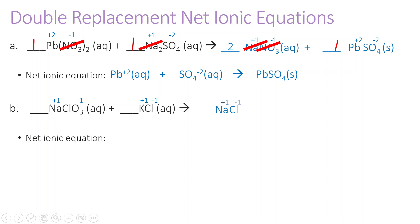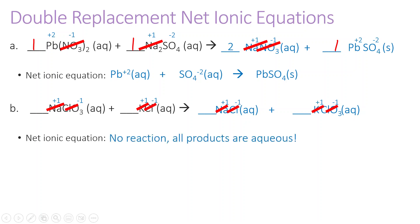I'm going to end up with sodium chloride — plus one and minus one works — and potassium chlorate, plus one and minus one as well. Now, sodium and potassium are both group one ions, so they're going to form aqueous compounds. Group one ions like sodium, lithium, potassium, and rubidium are considered always soluble. So NaCl is aqueous and potassium chlorate is also aqueous. Since everything starts as aqueous and everything ends as aqueous, we're going to have no reaction here.